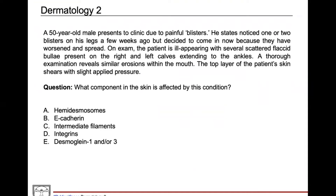We have a 50-year-old male presenting to clinic with painful blisters. He noticed one or two blisters on his legs a few weeks ago but decided to come in now because they have worsened and spread. On exam, the patient is ill-appearing with several scattered flaccid bullae present on the right and left calves extending down to the ankles. A thorough examination reveals similar erosions within the mouth, and the top layer of the patient's skin shears with slight applied pressure.